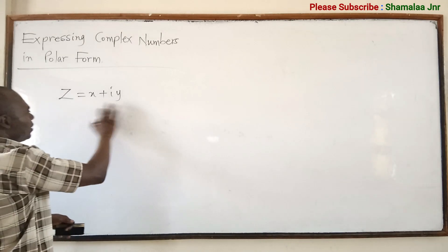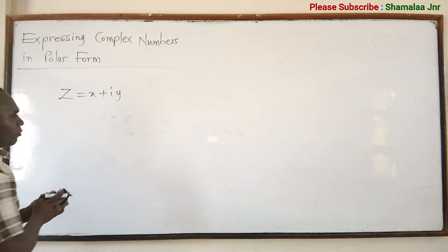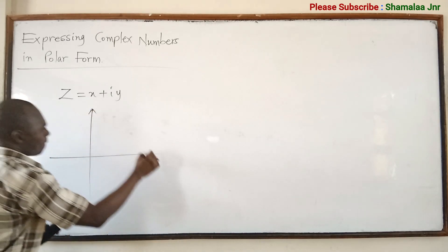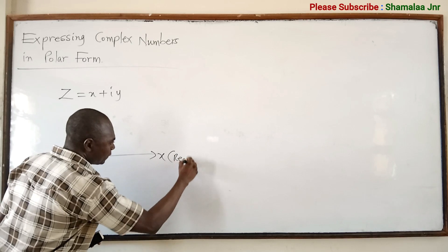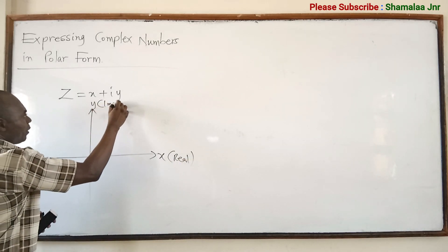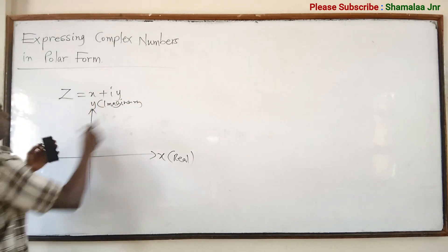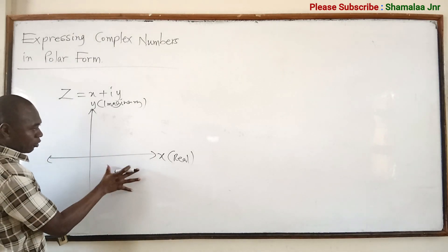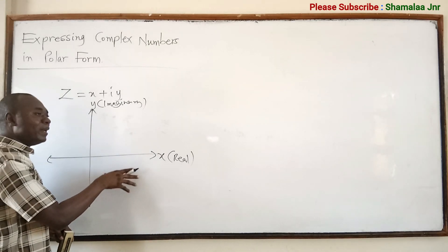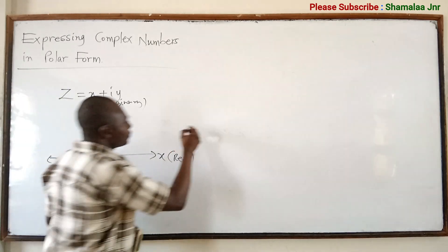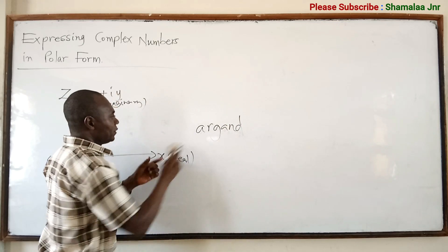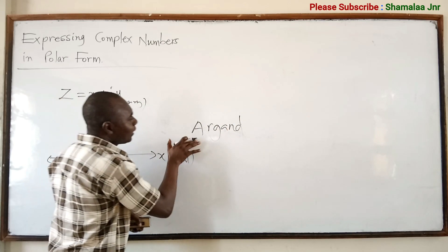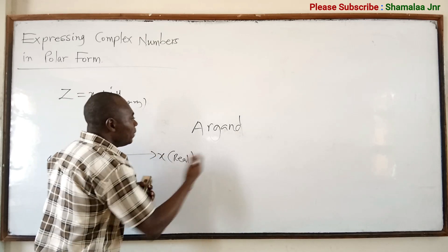This is the real part and this is the imaginary part. Now this complex number can be represented in the complex plane — the x-axis is for the real part and y is the imaginary part. This is called the complex plane, or sometimes the Argand plane, or the Argand diagram, or sometimes the Gaussian plane.